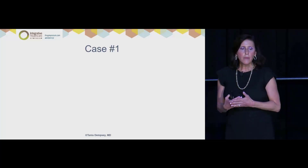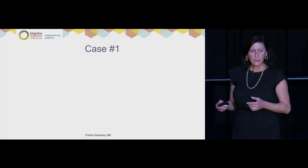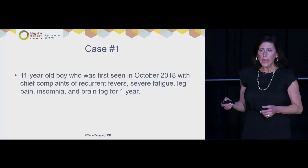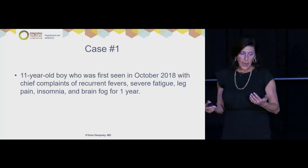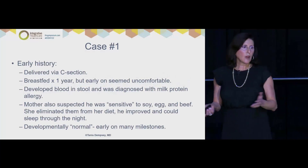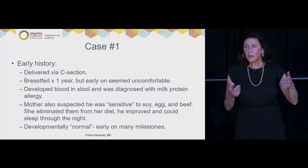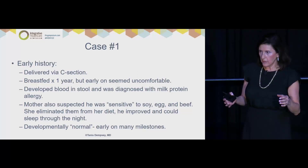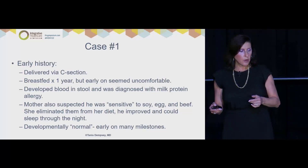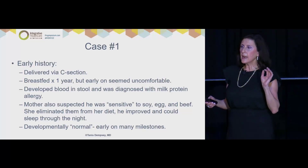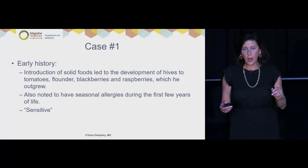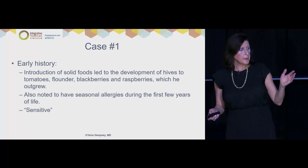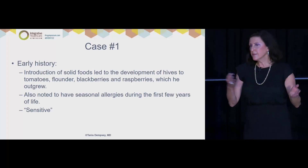I'd like to run through a case that demonstrates this so you understand how I approach these patients. This is an 11-year-old boy I saw for the first time in October 2018. He had recurrent fevers, severe fatigue, leg pain, insomnia, and brain fog for a year. He was delivered by C-section, breastfed for a year, but the mother struggled with her diet — he was sensitive to everything she ate. He had blood in the stool and a milk protein allergy. Developmentally he was normal and met milestones early. He had problems early on introducing food, developed seasonal allergies, and became a sensitive kid — the mother described how his socks had to be a certain way, pants had to be sweats.